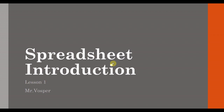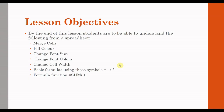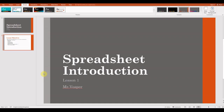First, we're going to have a look at our objectives. By the end of this lesson you should be able to: merge cells, fill colors in cells, change the font size and color, change the cell width. We're going to be doing some basic formulas using the plus, minus, divide, and multiplication symbols, and we're also going to look at the formula function equals SUM.